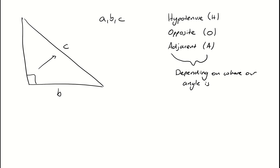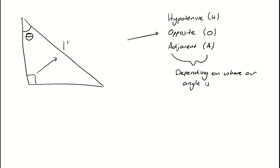So here we have our right angle triangle, and we'll erase A, B and C - we're no longer looking at Pythagoras anymore. We're now going to use trigonometry, where we start to incorporate angles into our calculations. Let's let our angle of interest be this angle here, and we'll give that angle the Greek symbol theta, which is quite commonly used for angles. I need to choose where my hypotenuse, my opposite, and my adjacent are going to go. My hypotenuse is always the longer side - always the side opposite my right angle - so this side here would be my H.